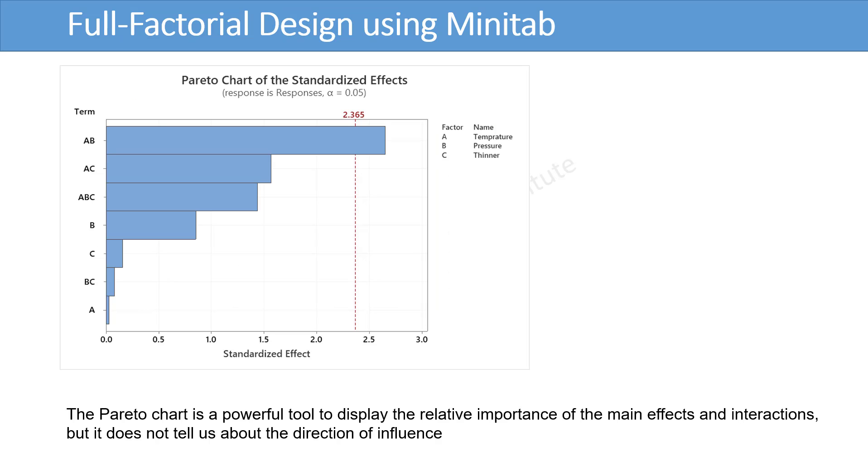The Pareto chart is a powerful tool to display the relative importance of the main effects and interactions, but it does not tell us about the direction of influence. Please note that the interaction temperature-pressure has the most higher effect in our model, as we have known before from the p-value.